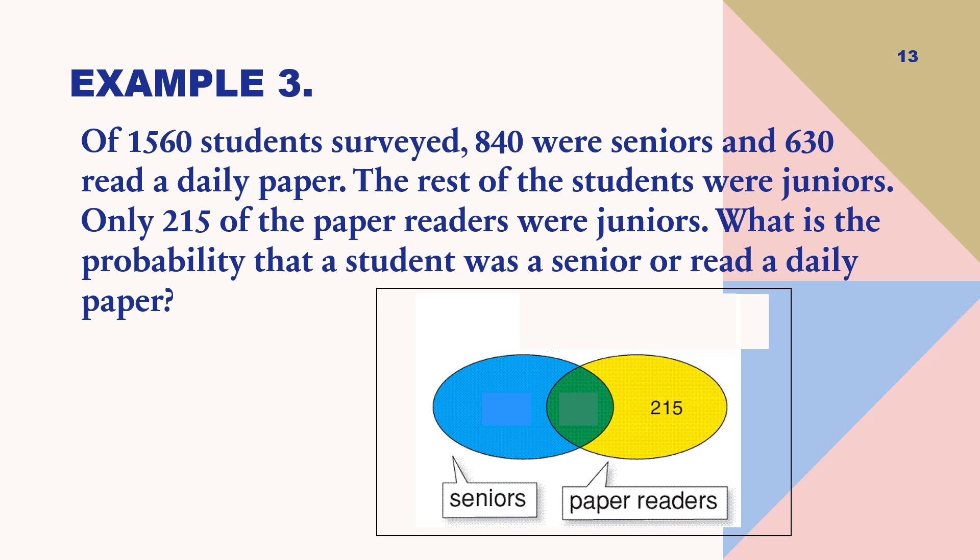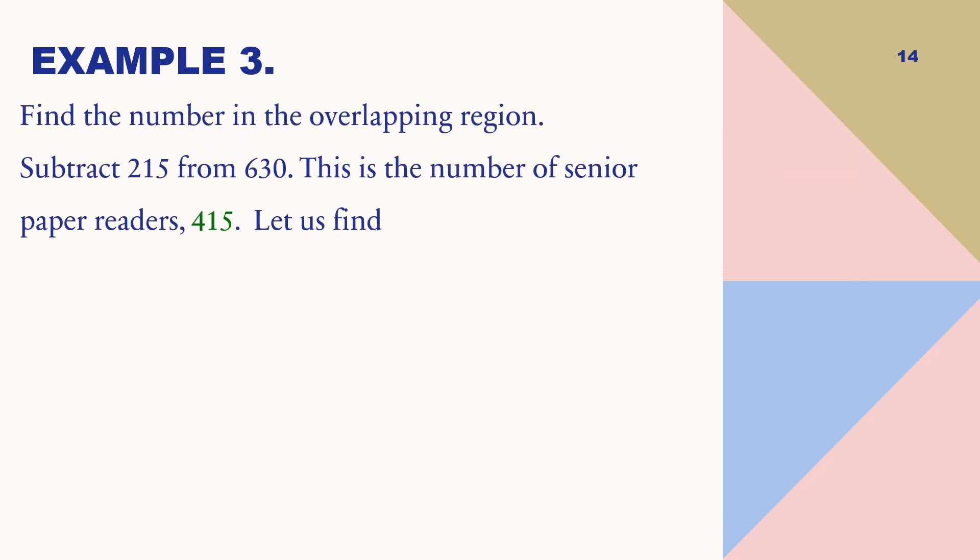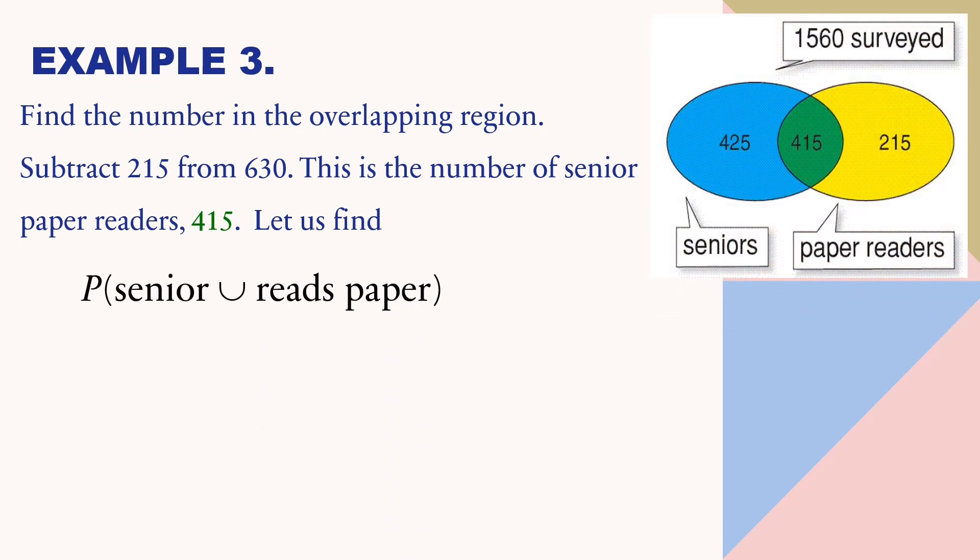let us have first the Venn diagram for seniors and those who read papers. So, here, the given is there are 215 paper readers. So, let us find first the number in the overlapping region. So, to find that, we will subtract 215 from 630. And this is the number of the senior paper readers, which is 415.